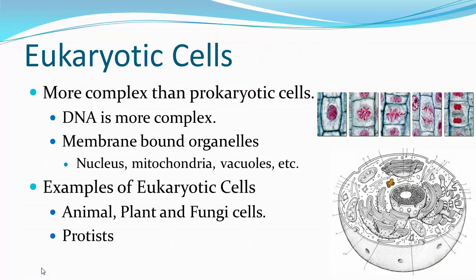What makes a cell more complex? A eukaryotic cell is what we call more complex cells in biology. Animal, plant, fungi, and protist cells are all eukaryotic cells. The DNA in a eukaryotic cell is more complex than in prokaryotic cells, and eukaryotes have membrane-bound organelles — the nucleus, mitochondria, vacuoles — all contained inside their own membranes, instead of activities taking place in the cytoplasm the way it's done in prokaryotic cells.